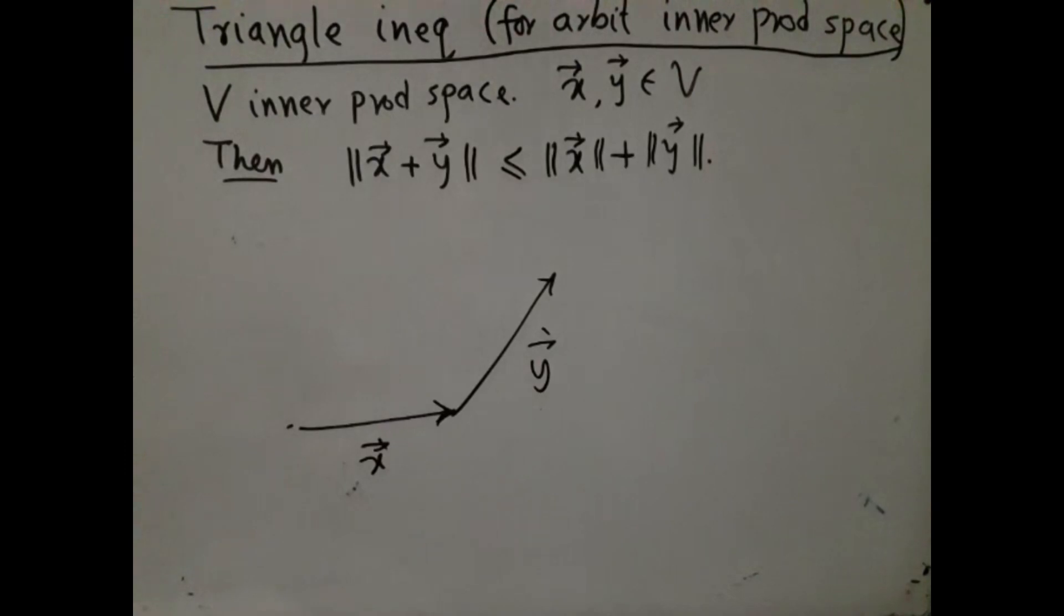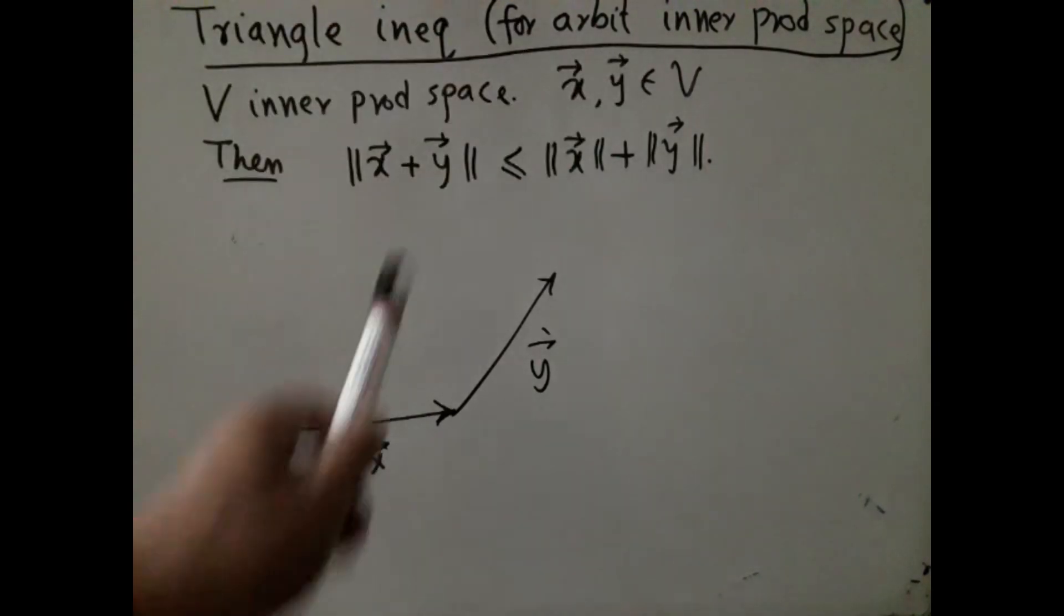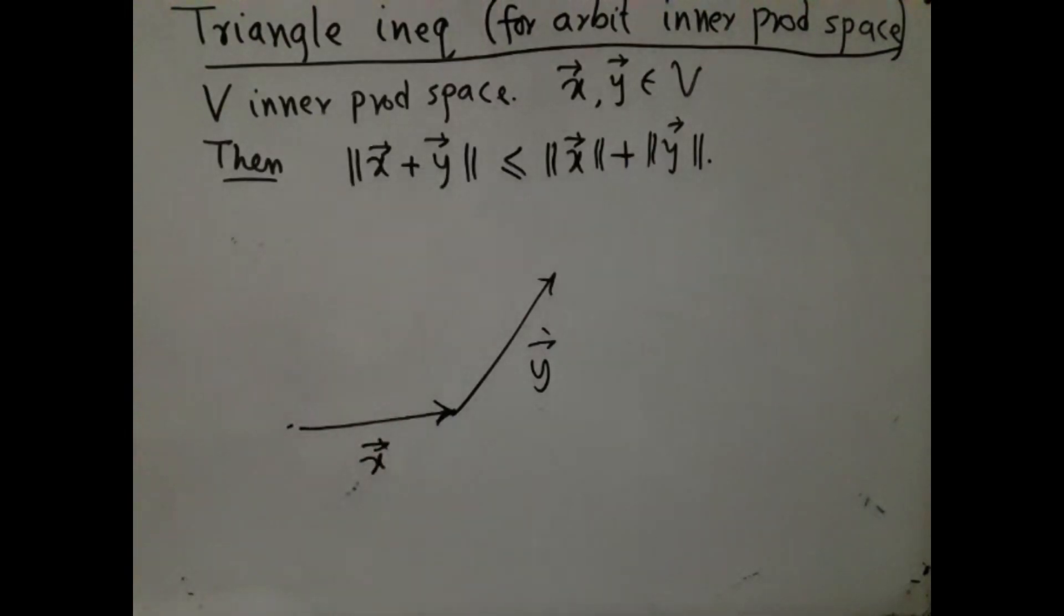We had earlier mentioned the triangle inequality which holds for arbitrary inner product spaces, and it said that if V is any inner product space, you take any two vectors in V, in that case ||x + y|| ≤ ||x|| + ||y||. Indeed this was property 3 which we used to define norms in general.